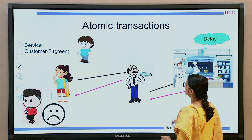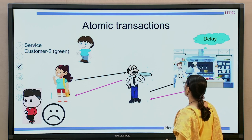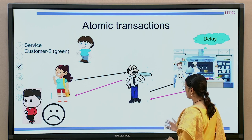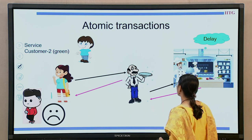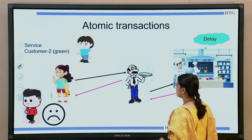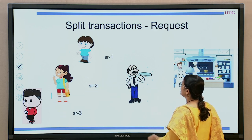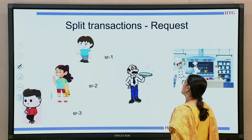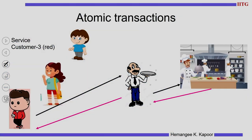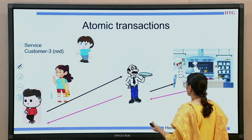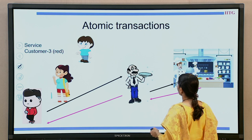What is atomic in this? When one transaction is issued, until that is completed, other transactions are not started. The blue customer is serviced first, then the green one, and eventually the red customer gets service. In this way we cannot have the best system performance because there will be a lot of delay in execution and customers will have to wait.